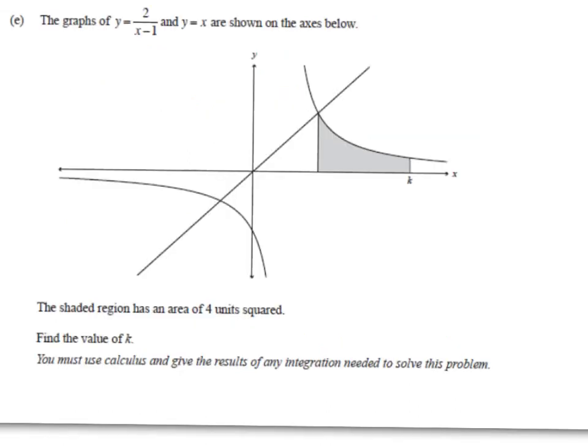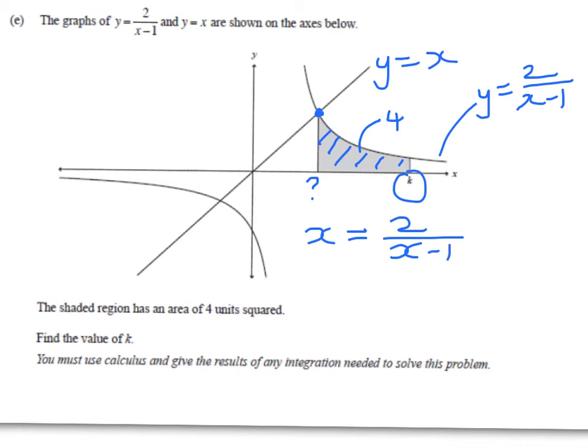This is one where we've got to find the area under a curve. We've got two graphs here. We've got Y equals X, which is this one. We've got this one here, which is Y equals 2 over X minus 1. We can see a shaded area. Now, it's a bit different because we're told that that area is 4 units squared. We don't know that value, and we have to find K. So what are we going to do? Well, we look at where the two lines meet. So we've got Y equals X, and Y equals 2 over X minus 1. So where are they the same?